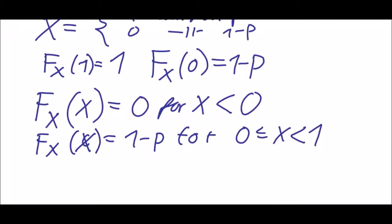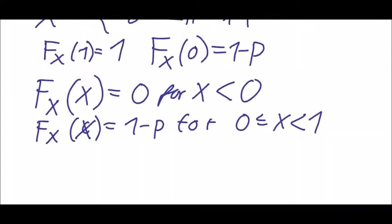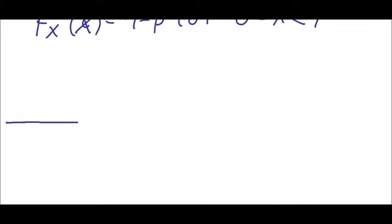So we have a function that looks like this. It is 0 for most values left of 0. Here we get to 0 and then it's 1 minus p from 0 to 1. Here is 1 and then it goes to 1.